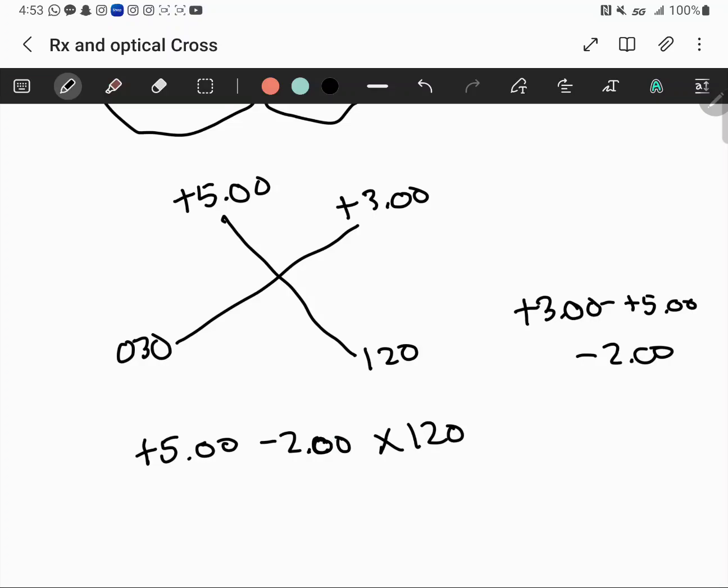To transpose, add the two powers together and get plus 3. Then flip the sign to be plus 2 and change the axis by 90 degrees.